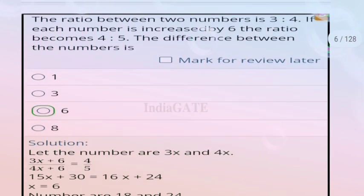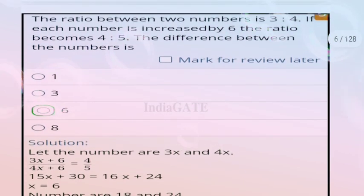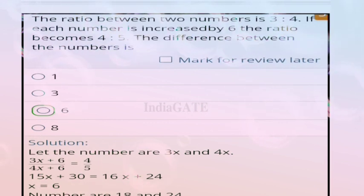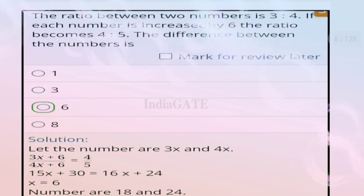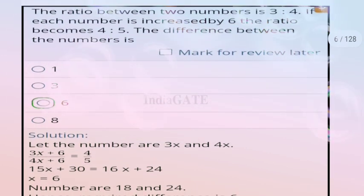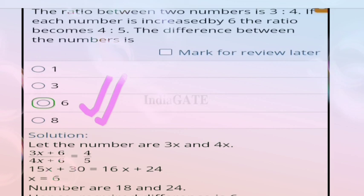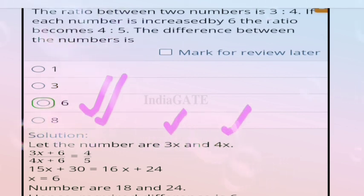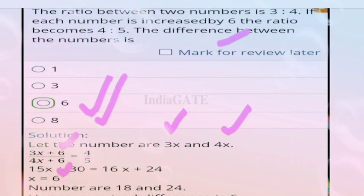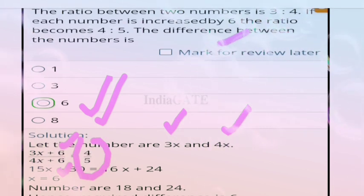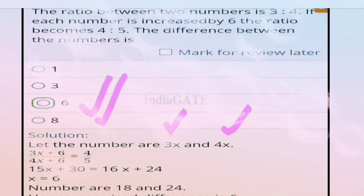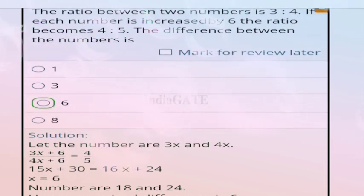Next question: the ratio between two numbers is 3:4. If each number is increased by 6, the ratio becomes 4:5. Find the difference between the numbers. The correct answer is option C, that is 6. We assume the numbers as 3x and 4x. Adding 6 to numerator and denominator and setting equal to 4/5, solving gives 6.